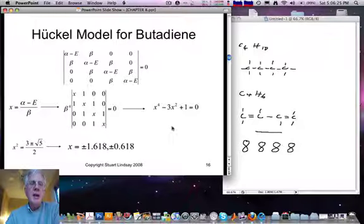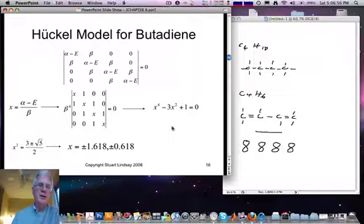So here then is the secular determinant where we have used the Hückel approximation, dropping the S overlap matrix elements and leaving just alpha and beta as the two parameters. We have four electrons, so the secular determinant is a four-by-four determinant. We can simplify this determinant by introducing this definition, X equals alpha minus E over beta, and the result is then this secular determinant with just X's along the diagonal and 1's off the diagonal.